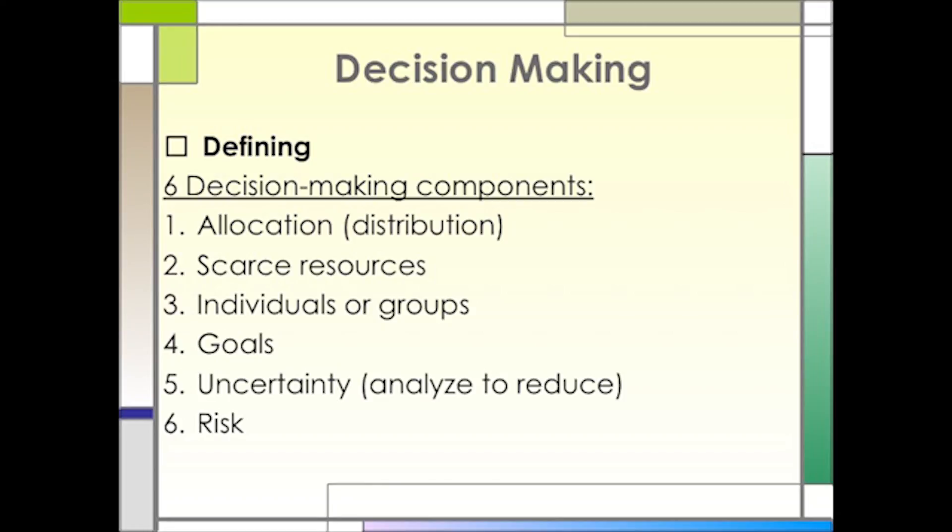Number three, is it one or two individuals who will be making the decision, or is it a group? We will discuss this in much more depth later on. Number four, what are our goals? If the goal is to maintain the status quo, decision-making is often much easier than if we are looking to bring about a major change.